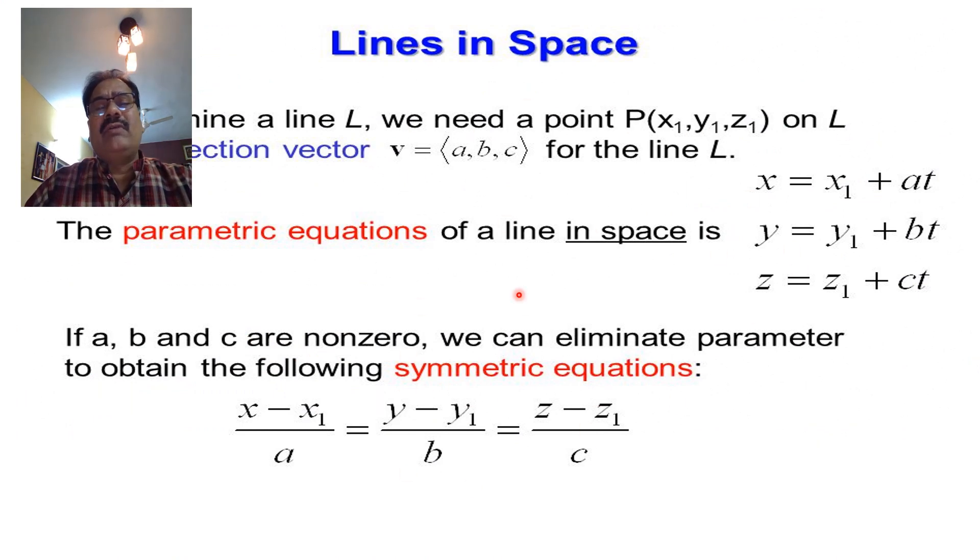To determine a line L in space, we need a point P(x₁, y₁, z₁) on L and a direction vector (a, b, c). Then the parametric equations are: x = x₁ + at, y = y₁ + bt, and z = z₁ + ct.